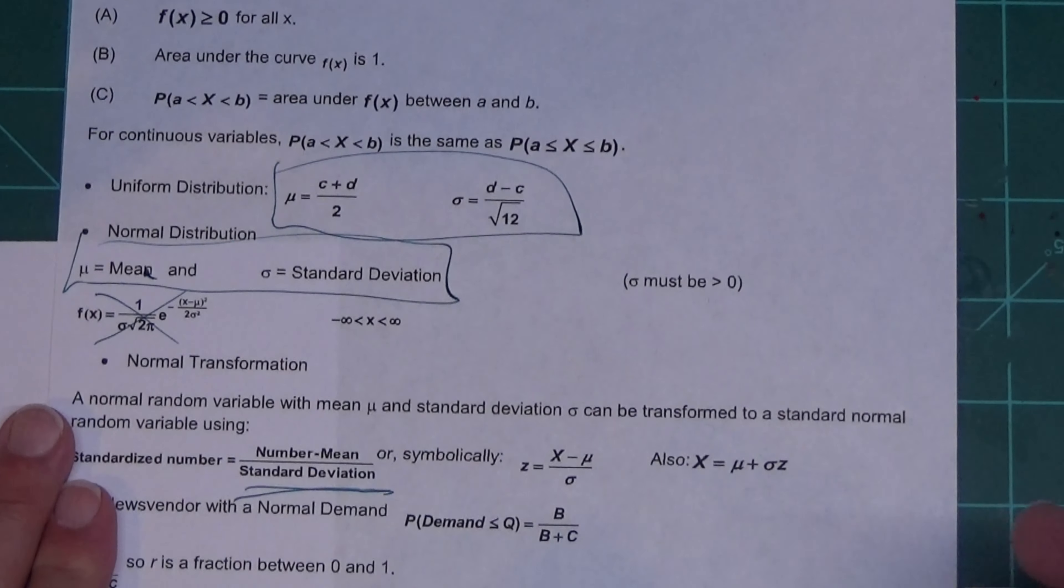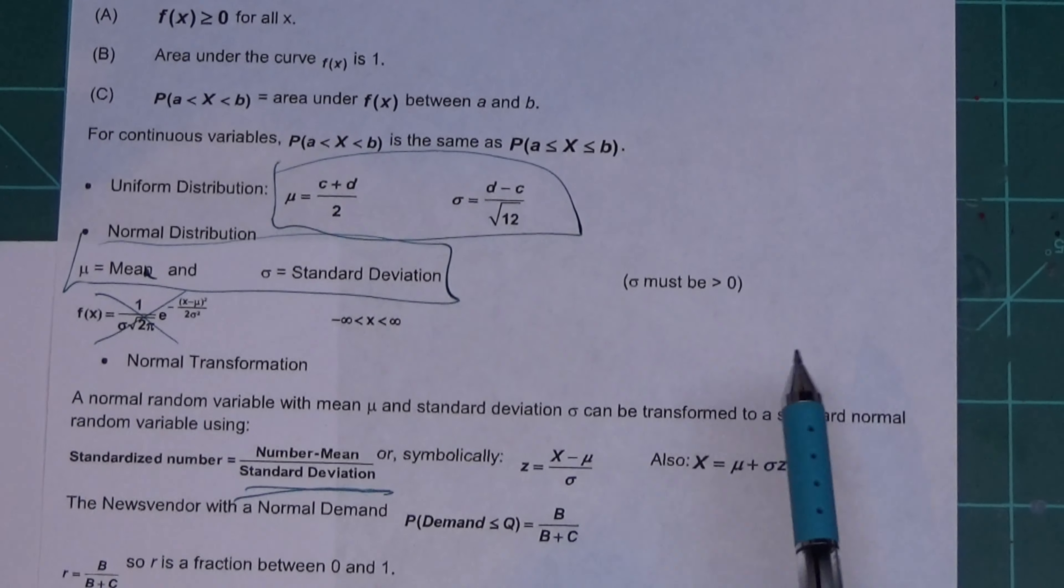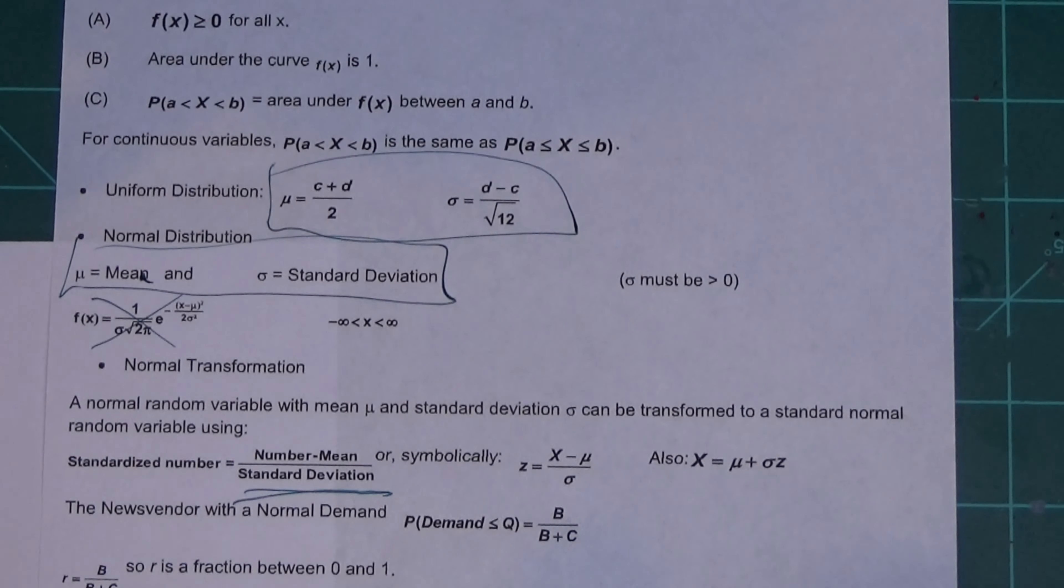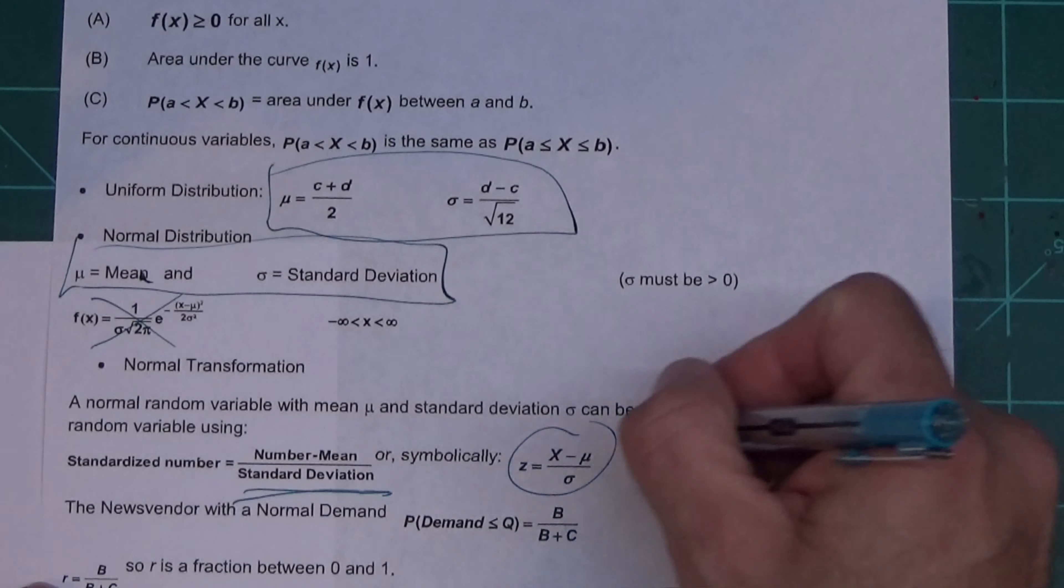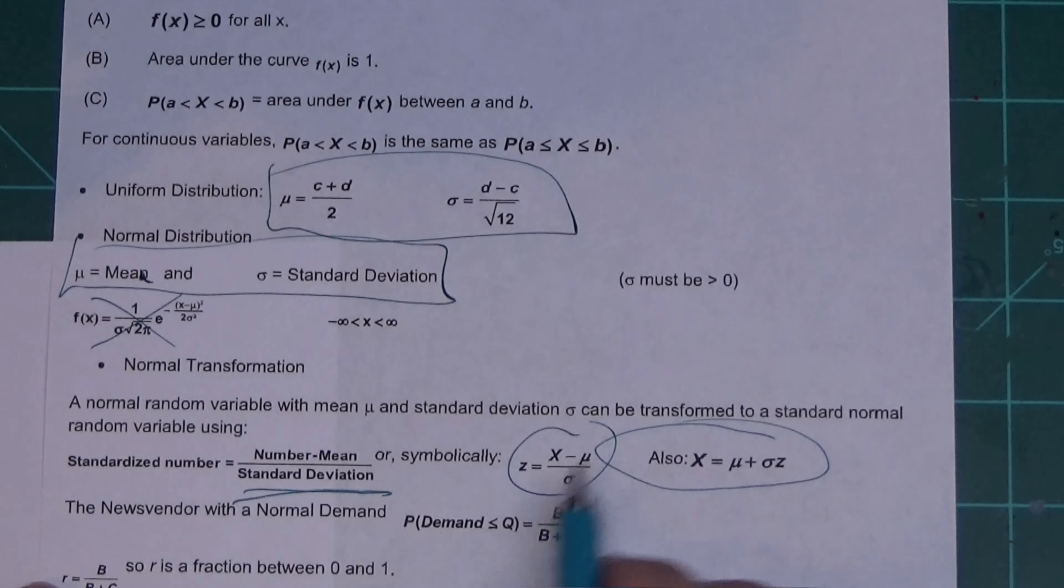You use Z to find it, and the inputs for it are in that box. Normal transformation—yeah, Z allows you to turn any normally distributed variable into a standard normal variable, and there's the two equations for Z. You will need both of those on a test.